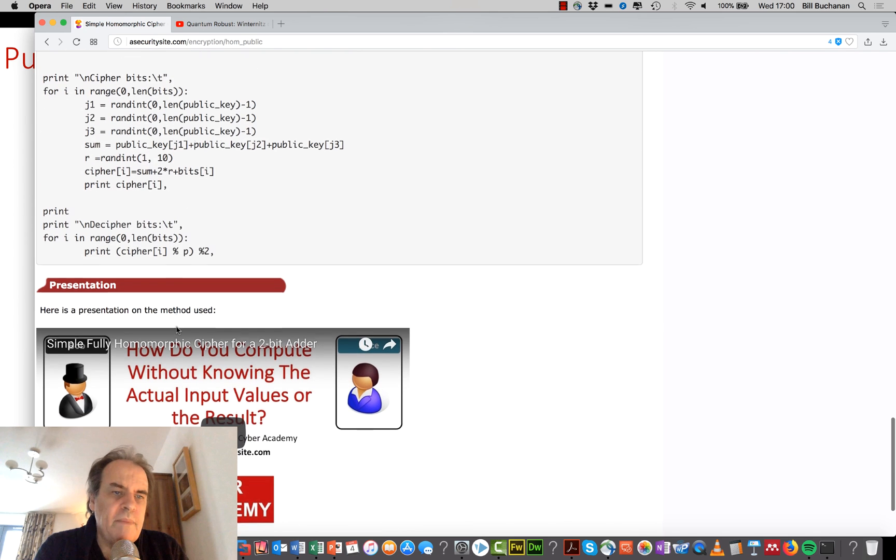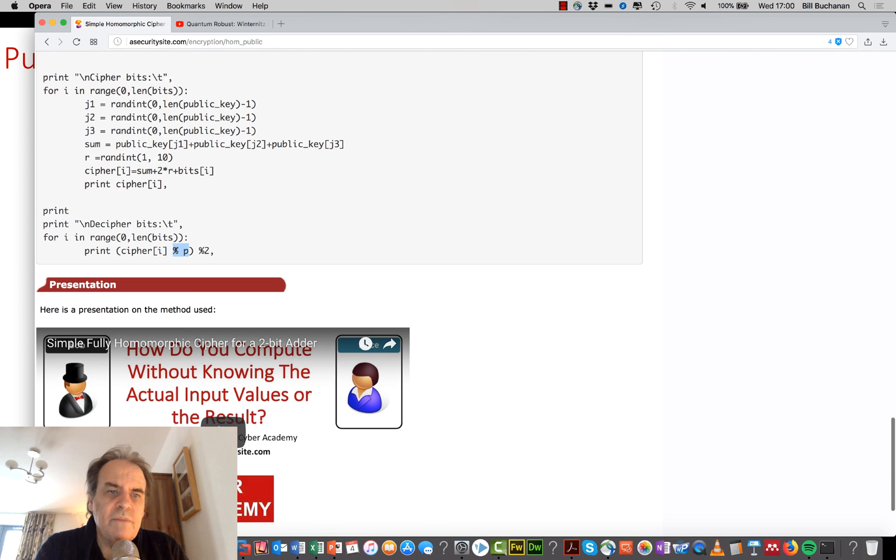Then when we receive that back, we'll just mod P, our private key, and then mod 2.